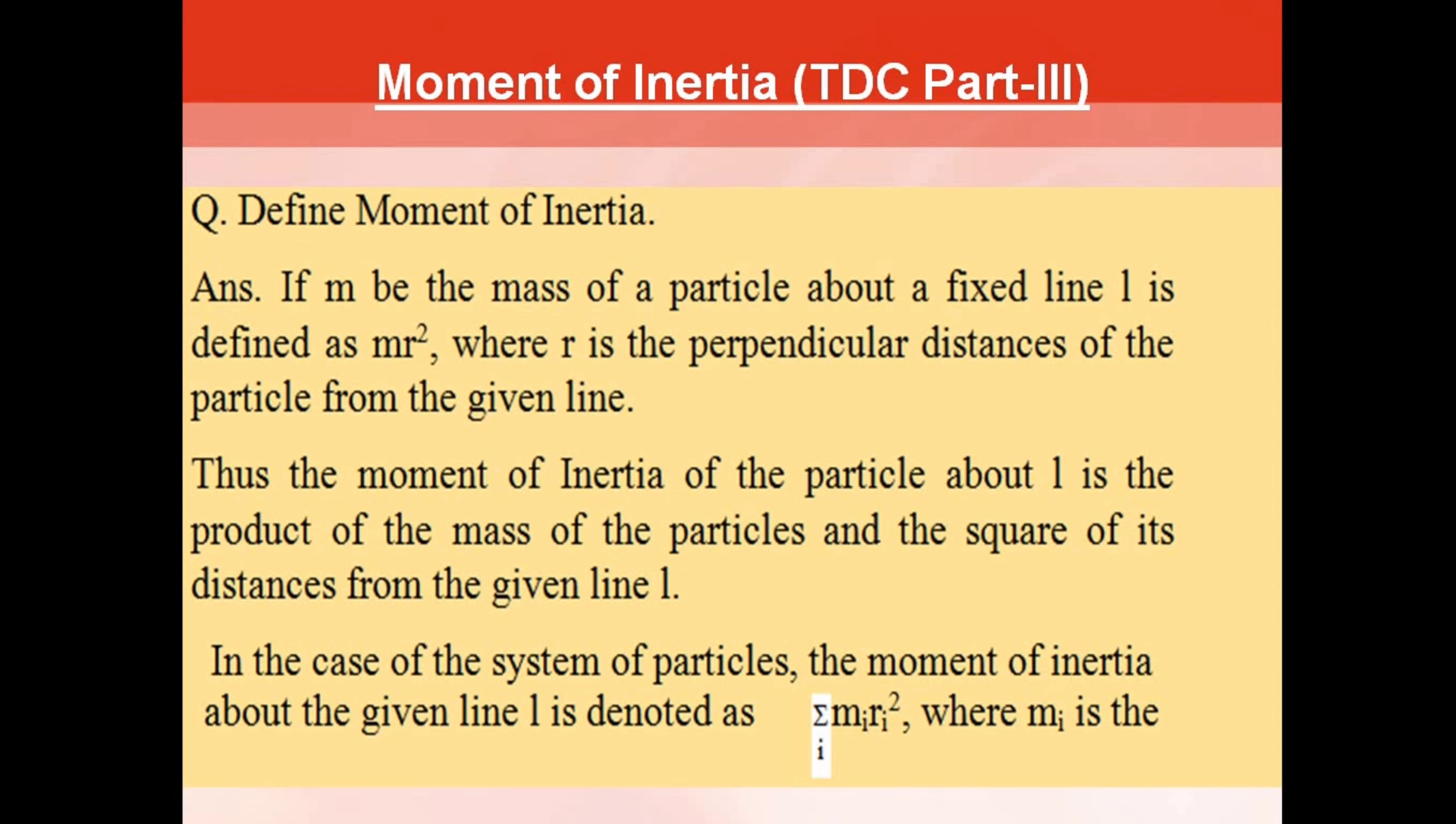Thus, the moment of inertia of the particle about l is the product of the mass of the particle and the square of its distance from the given line l.